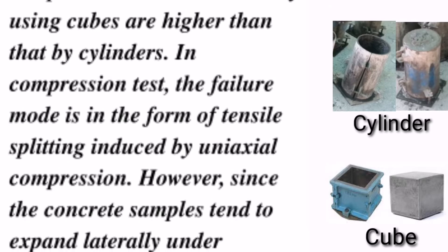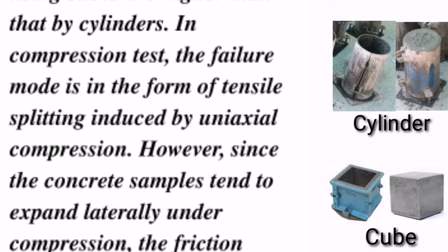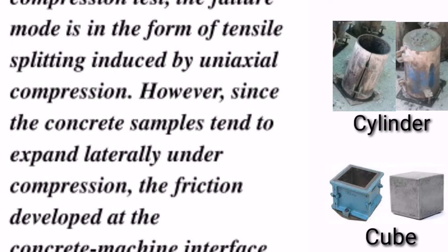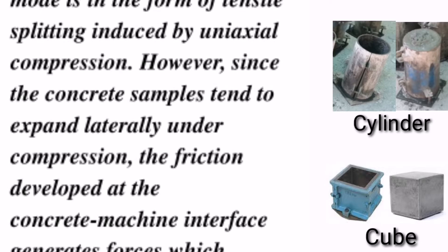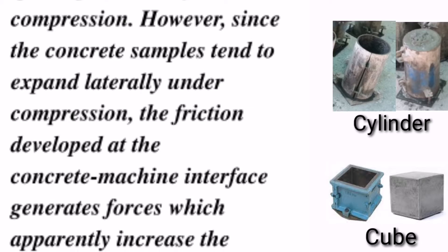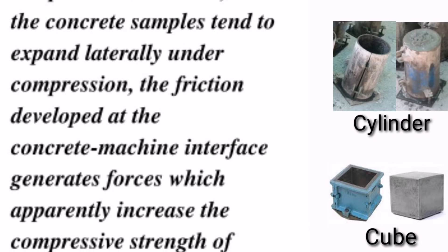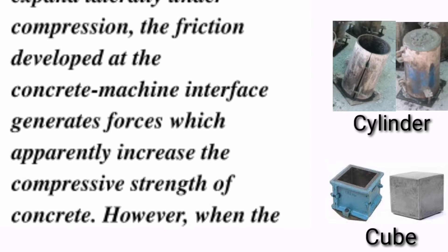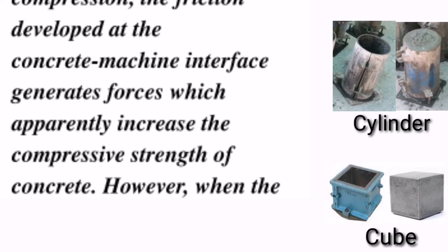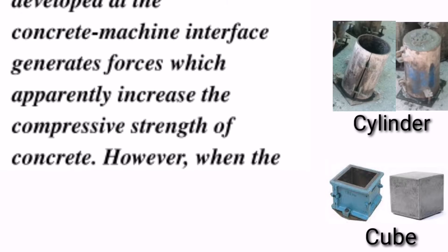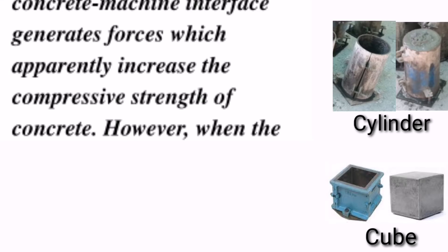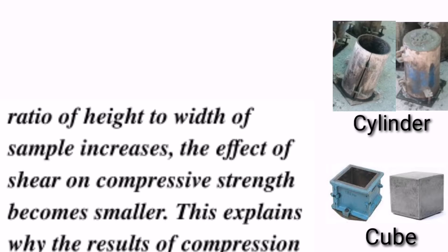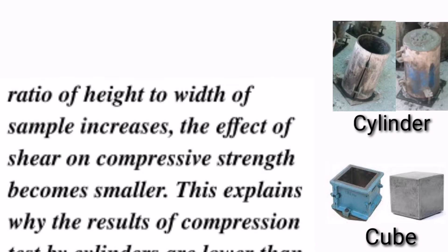In a compression test, the failure mode is in the form of tensile failure induced by uniaxial compression. However, since the concrete samples tend to expand laterally under compression, the friction developed at the concrete-machine interface generates forces which apparently increase the compressive strength of concrete. However, when the ratio of height to width of the sample increases, the effect of shear on compressive strength becomes smaller.